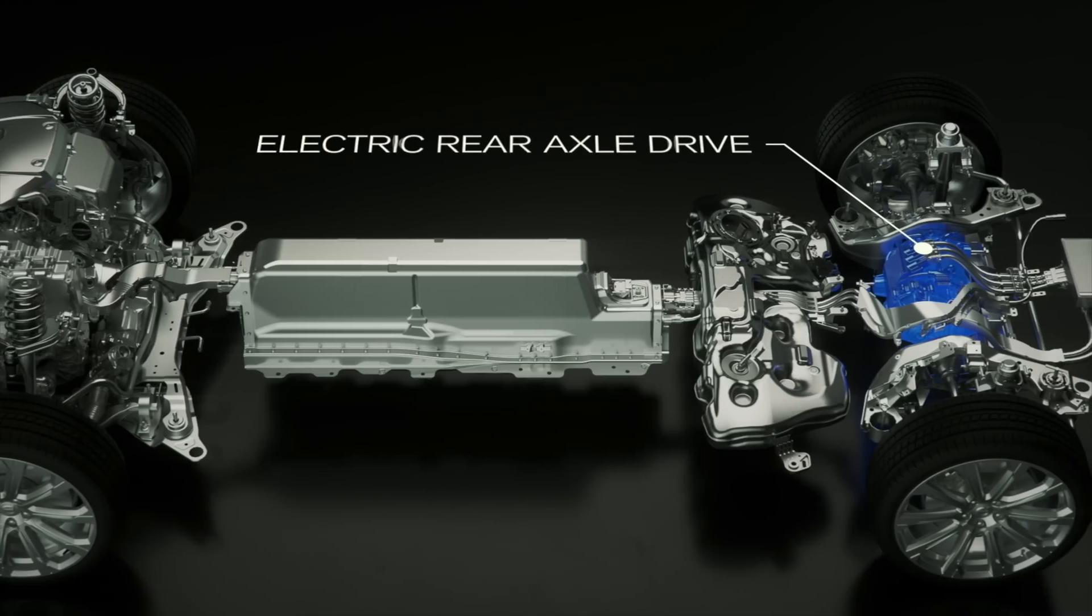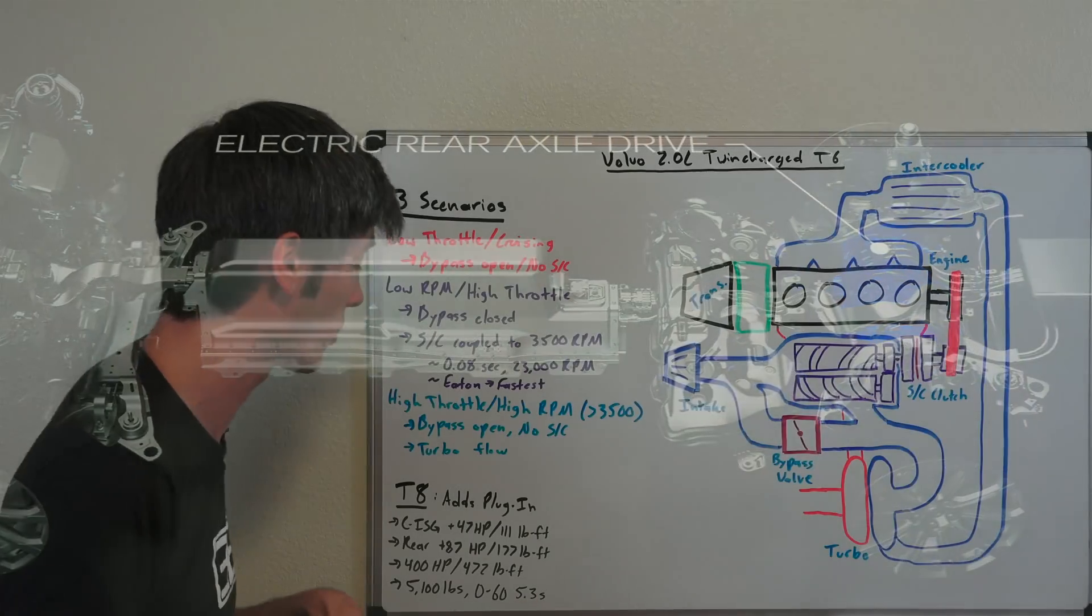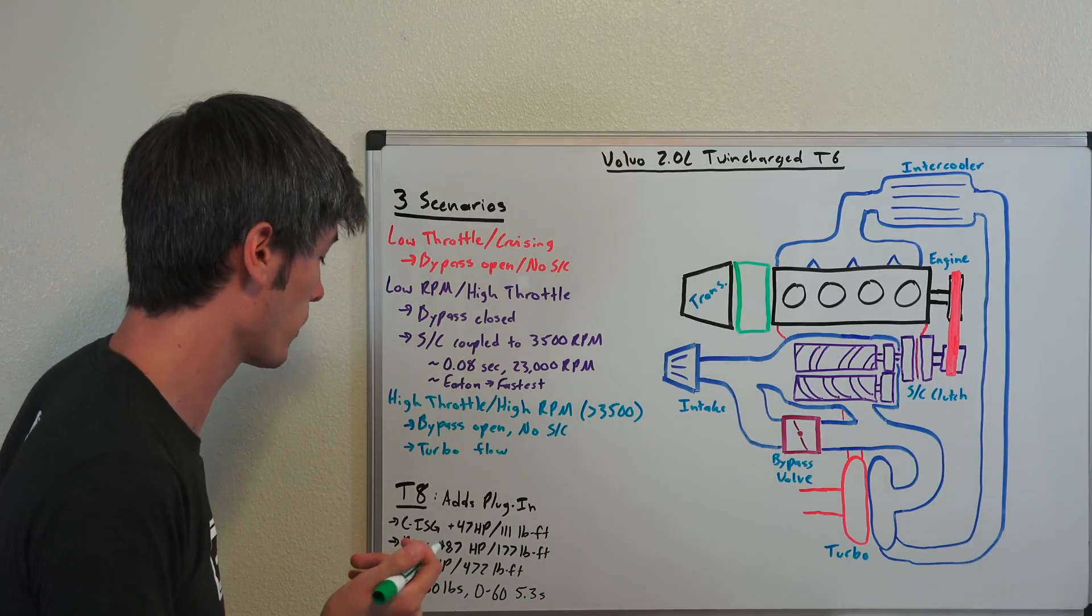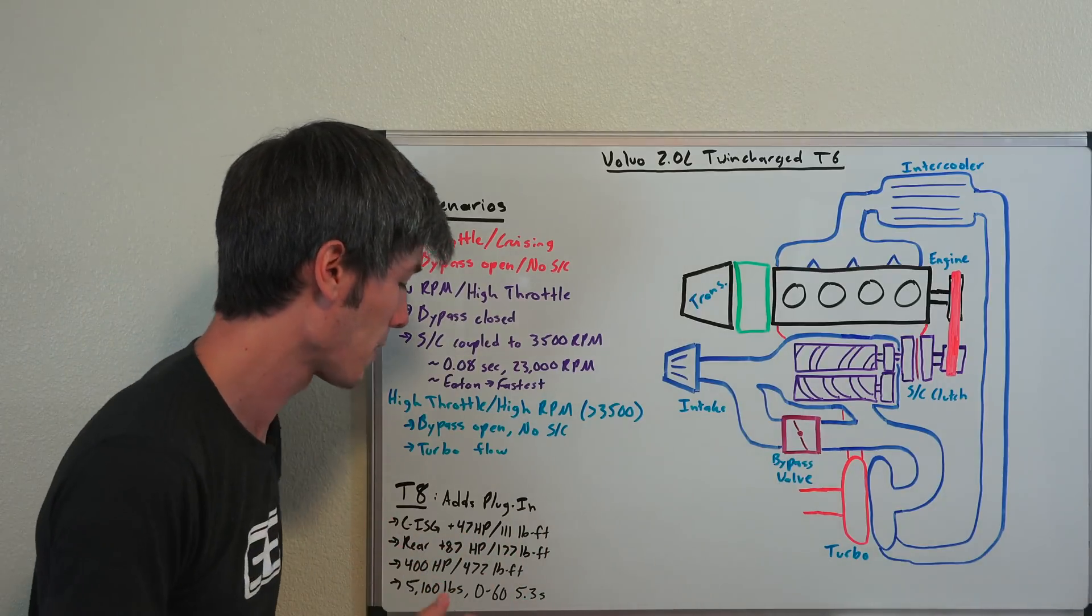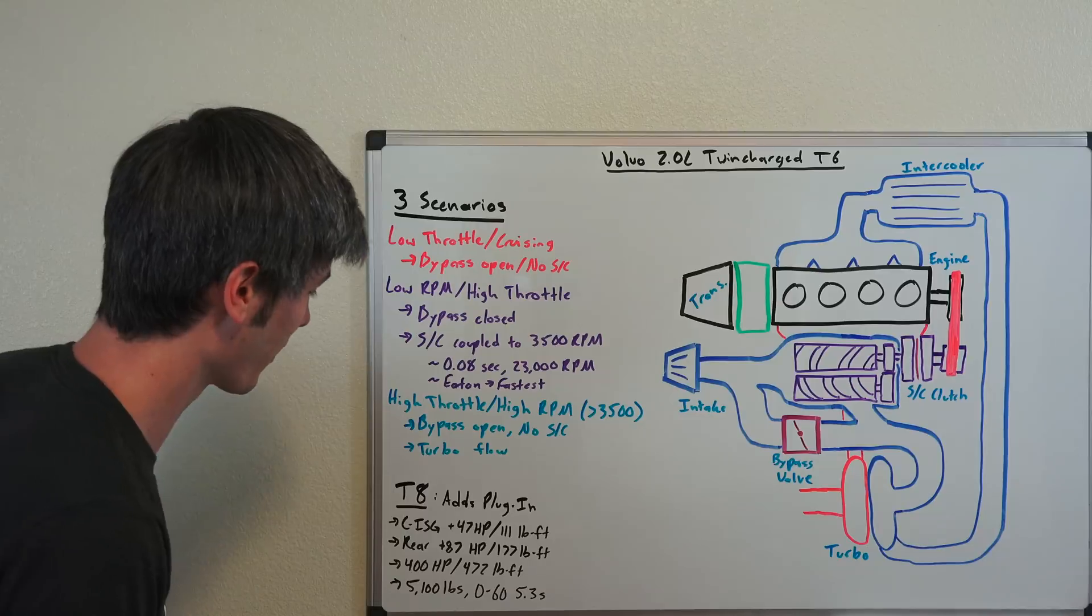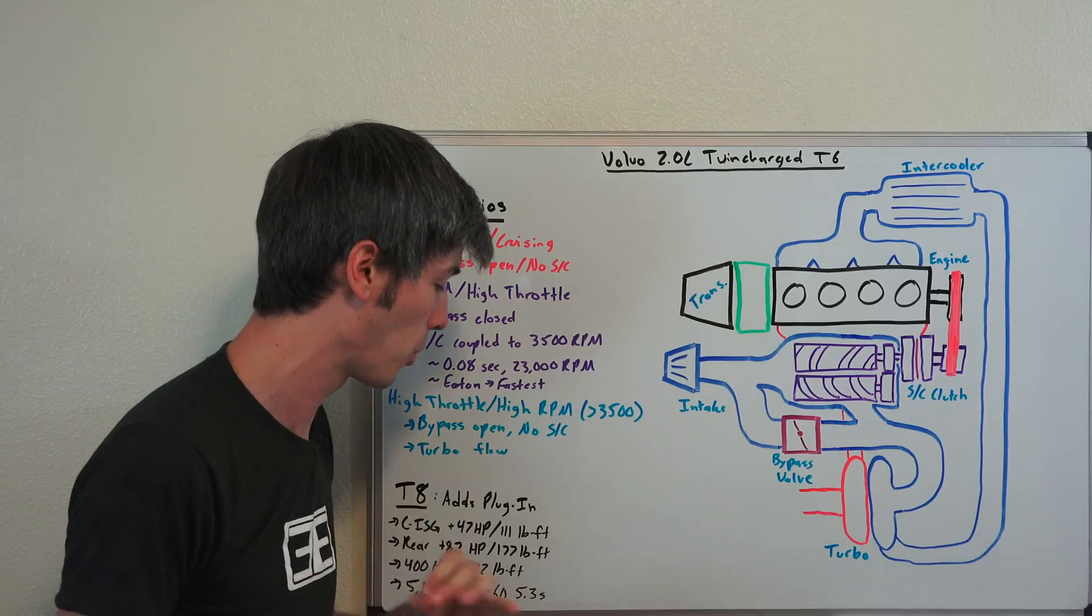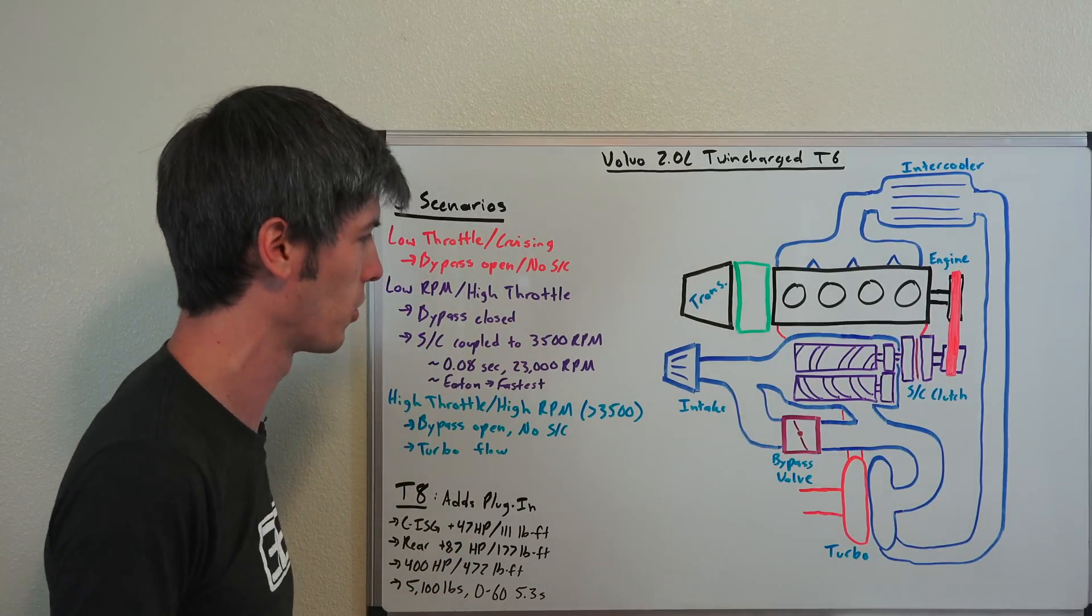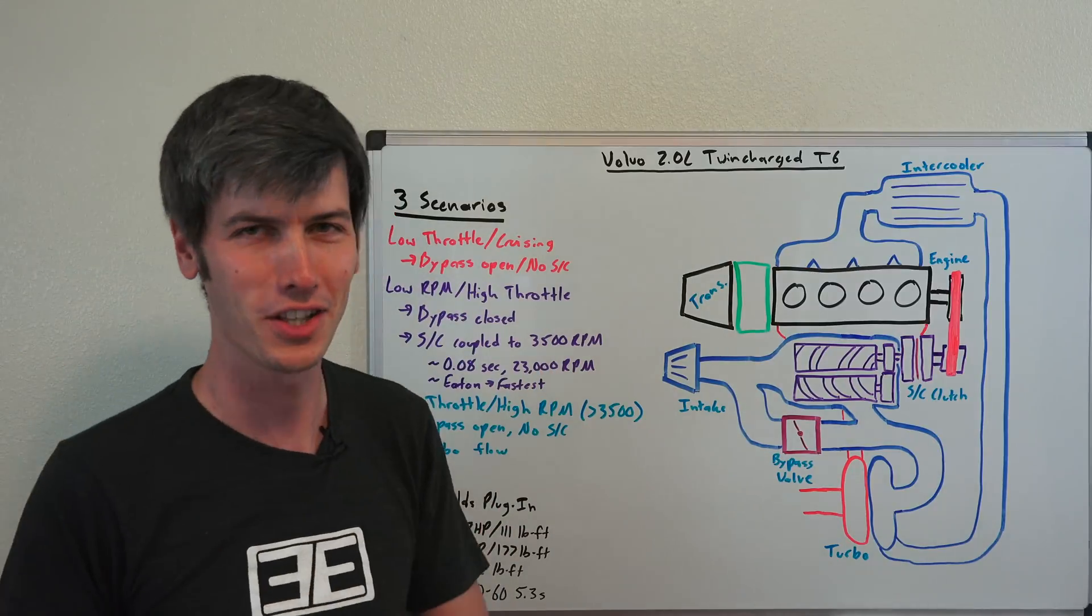177 pound-feet of torque. So this gives the total output peak for this system at 400 horsepower, 472 pound-feet of torque with the T8 engine option, the twin engine option. And in a vehicle, the XC90, which is weighing about 5,100 pounds, they're claiming a 0 to 60 time in 5.3 seconds.